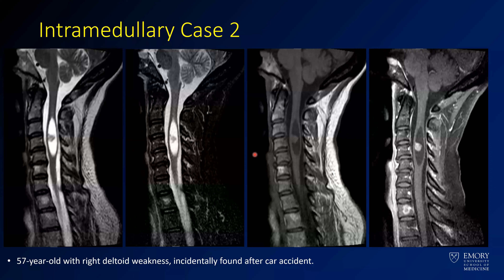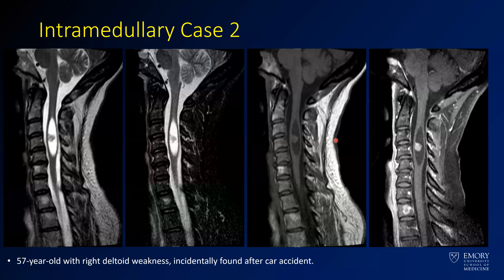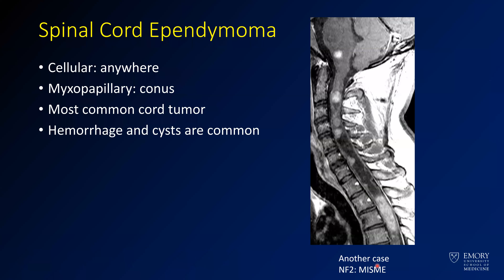Here we have a counter case — a 57-year-old with right deltoid weakness. They were in a car accident, got a CT to evaluate for trauma, and this lesion was found incidentally. Similar to the other lesion, the cord is expanded, but the margins are a little better defined. On T2 and T2 fat sat, you see pretty well-defined margins with what looks like a little nodule in the center. On post-contrast, that little nodule in the center is enhancing — this is an ependymoma.